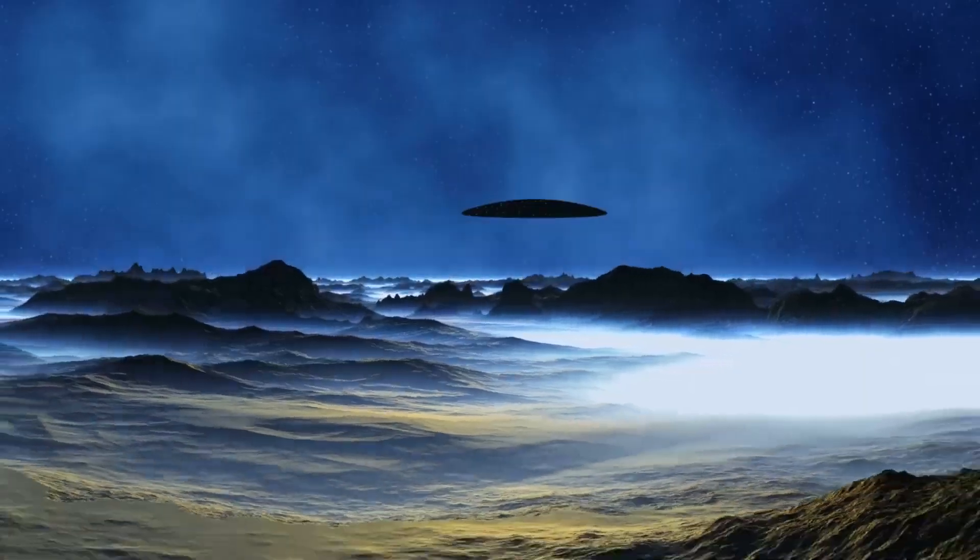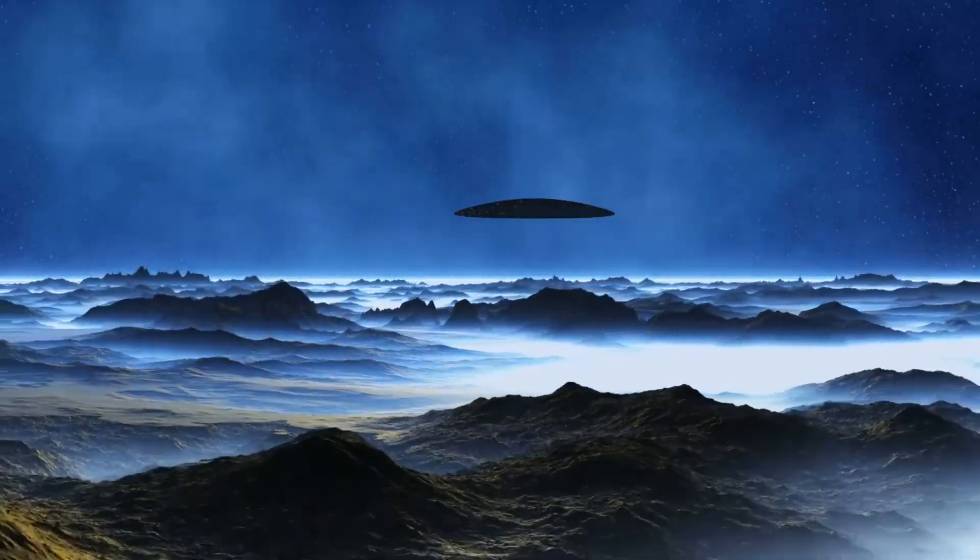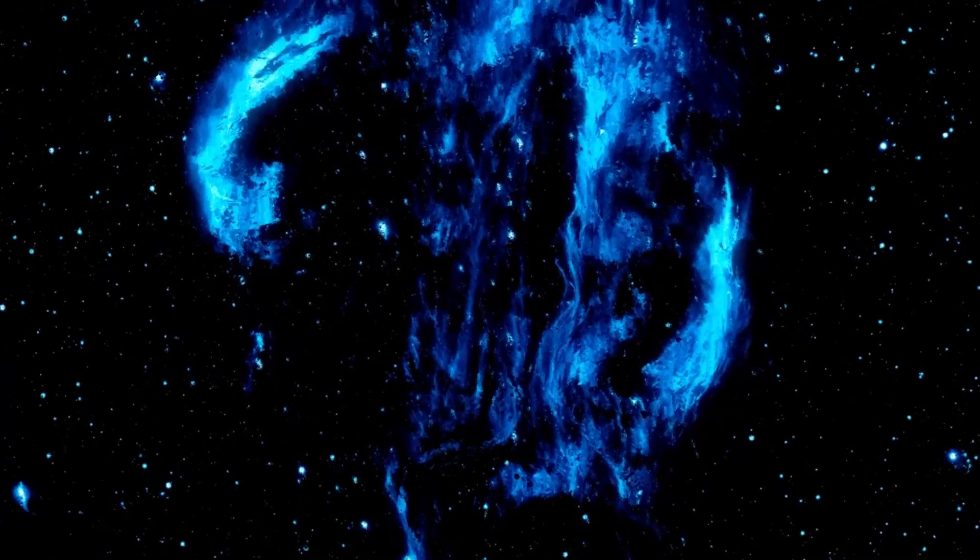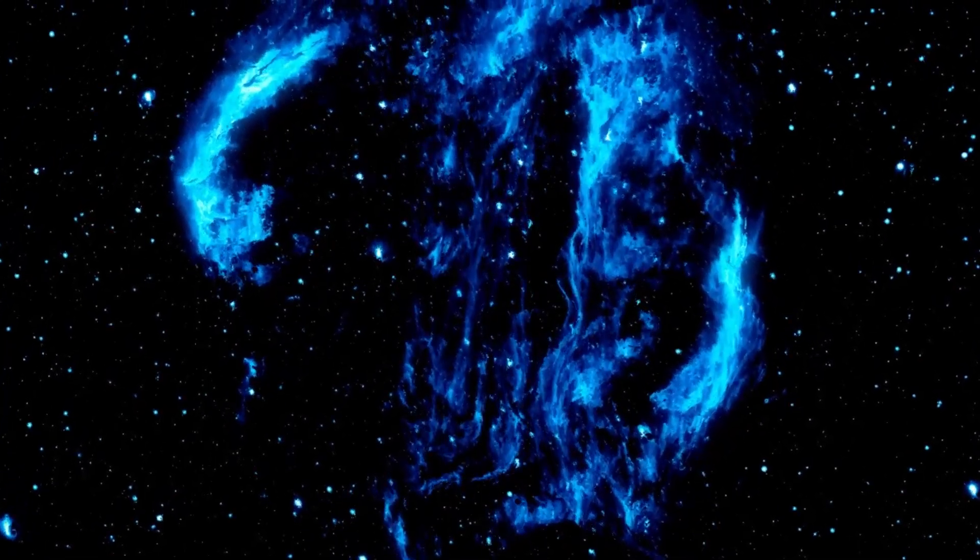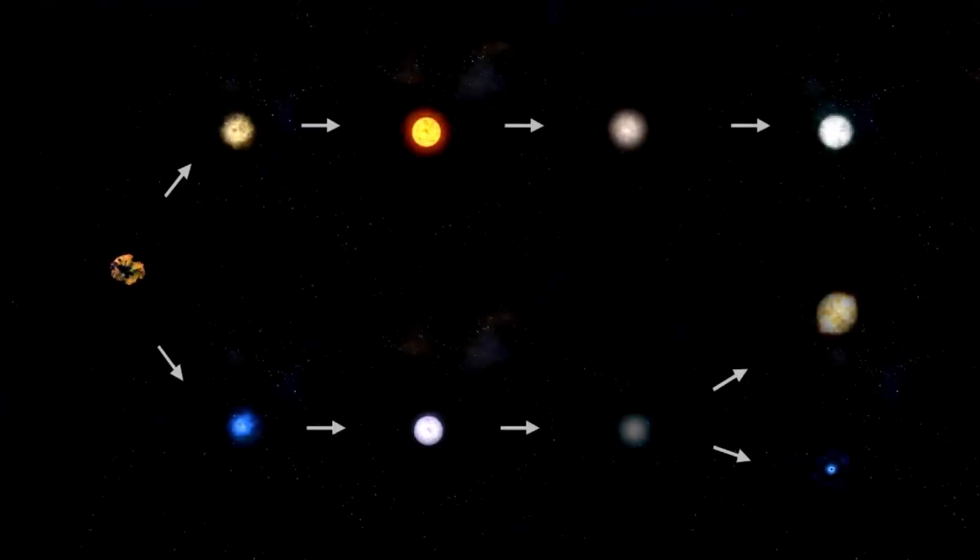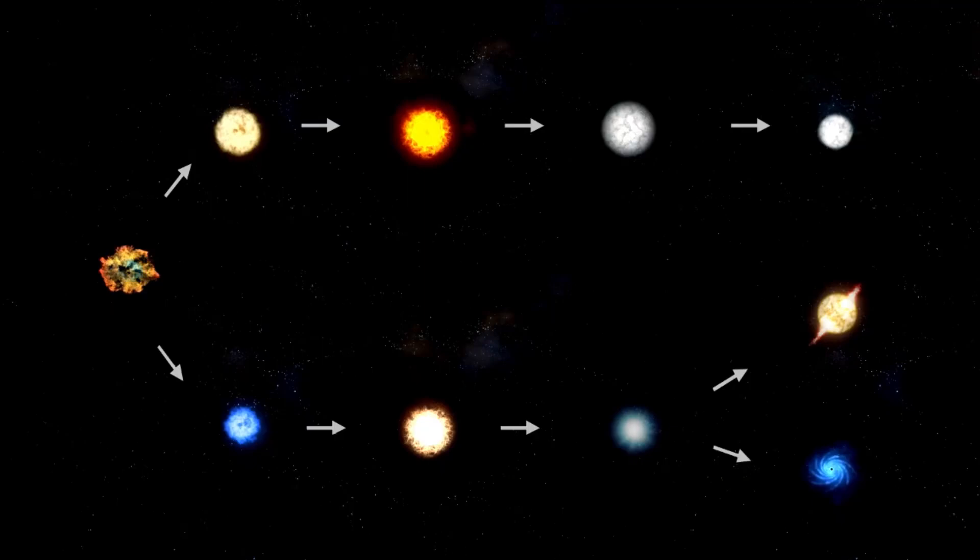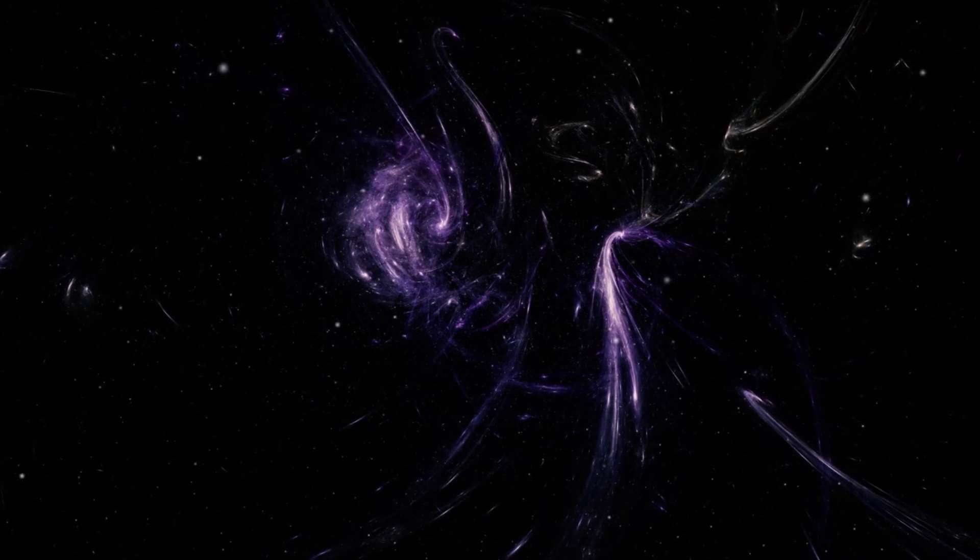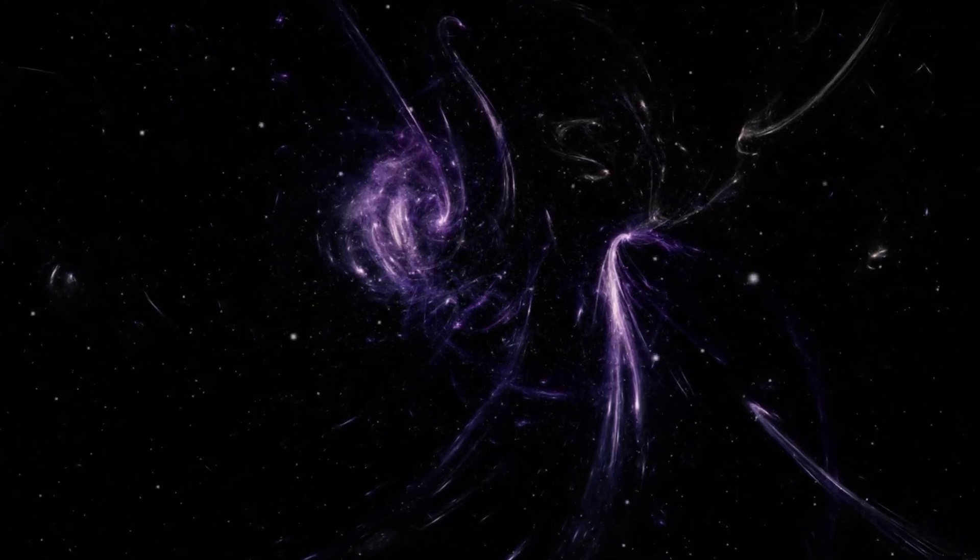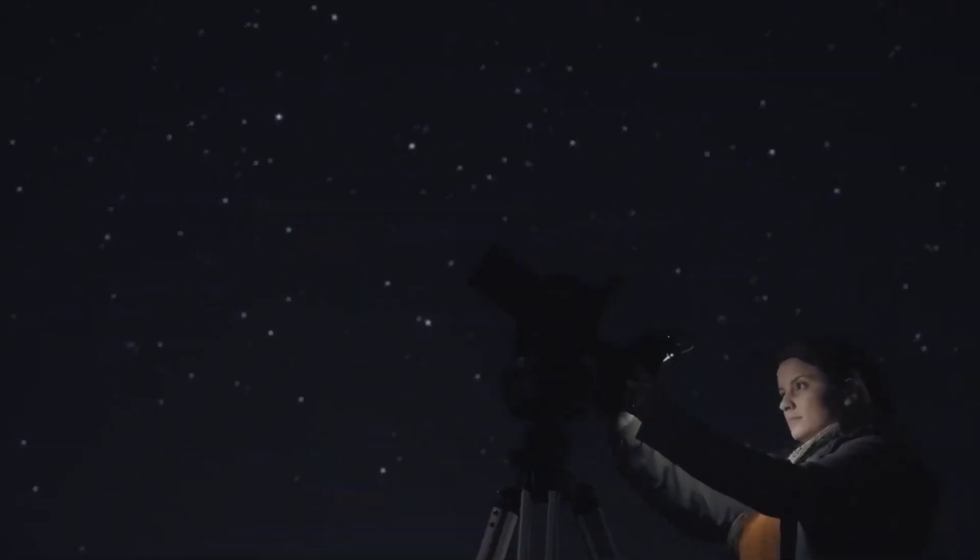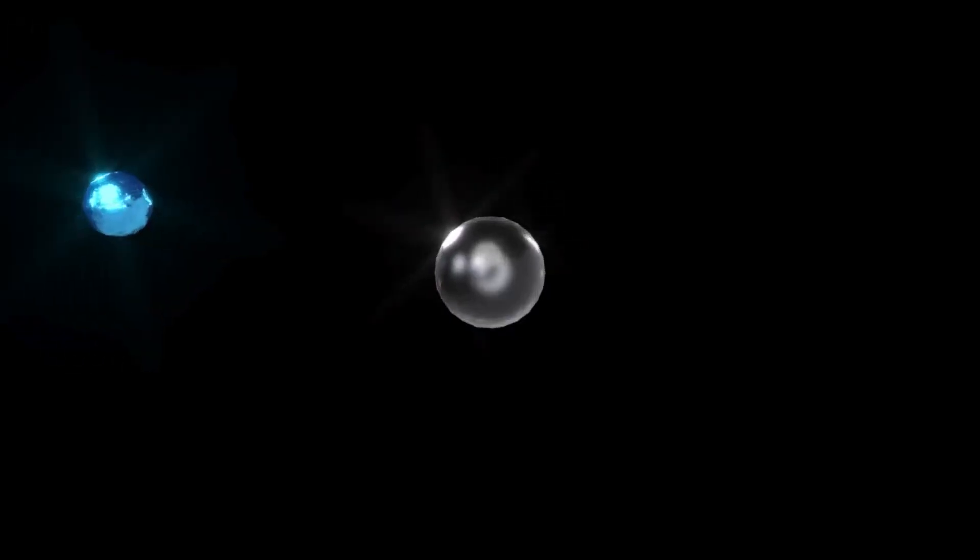The cyclic universe theory offers a compelling explanation for the origins of the cosmos, but it also introduces new mysteries. For example, if the universe has gone through multiple cycles, what caused the first cycle to begin? And if the universe is eternal, does that mean it has always followed the same pattern of expansion and contraction, or could it have evolved over time? These questions highlight the complexity of the cosmos and the limits of our current understanding.